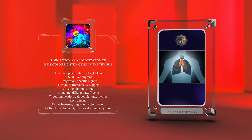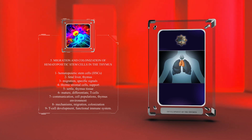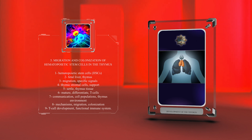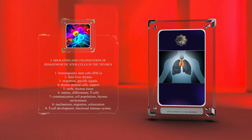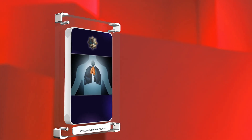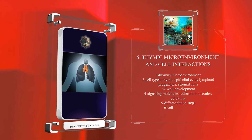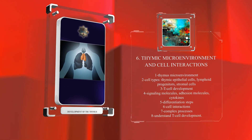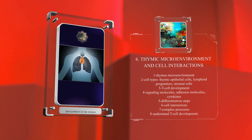The maturation process involves communication between HSCs, thymic stromal cells, and other cell populations in the thymus environment. Understanding the precise mechanisms of HSC migration and colonization helps us comprehend T-cell development and the establishment of a functional immune system. The thymus microenvironment is made up of different cell types, including thymic epithelial cells, lymphoid progenitors, and stromal cells, which work together to support T-cell development.